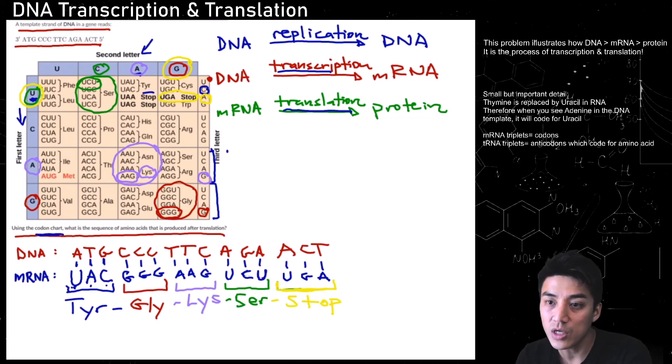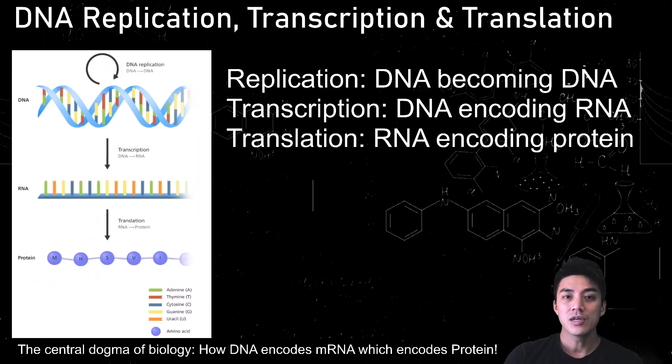So just to summarize, we did a problem where we took a DNA template strand. It underwent transcription to become mRNA. And finally, the mRNA became protein. So in summary, DNA becoming DNA is known as replication. DNA becoming mRNA is known as transcription. And mRNA encoding for proteins, as it starts building polymers of amino acids to create one big chain, which eventually becomes a protein or an enzyme, that's known as translation.